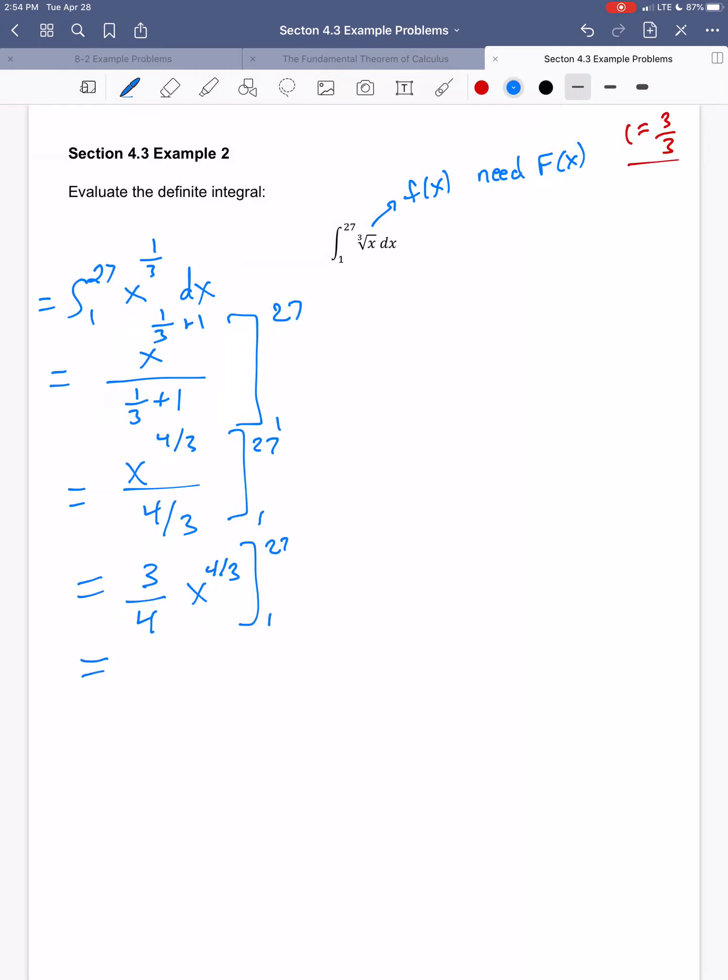So this three-fourths, I'm going to plug in the 27 and then plug in the 1 and subtract. Both terms are going to have a three-fourths. So I can essentially factor out that three-fourths. I don't have to include it on both parts.